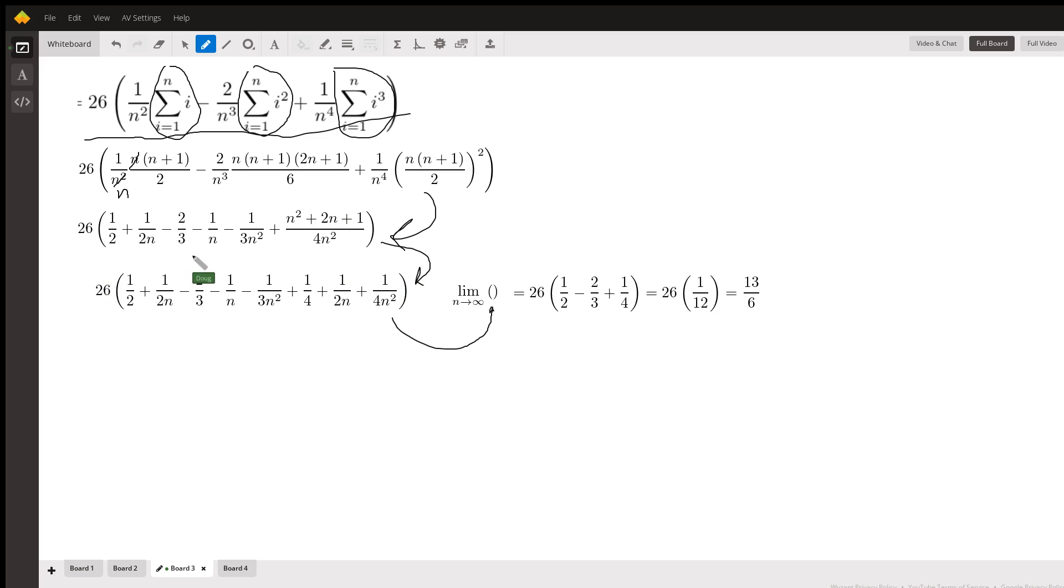Here is a formula in terms of n for the sum of n rectangles. Now if we let the number of rectangles approach infinity, that means every one of these terms that has n in the denominator will approach zero. So all that remains is one half minus two thirds plus one fourth. If you add those fractions, you get one twelfth. 26 twelfths reduces to 13 sixths. There you go. Hope that helped. If you have any questions, post a comment.